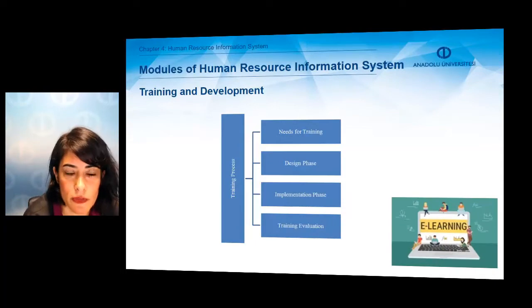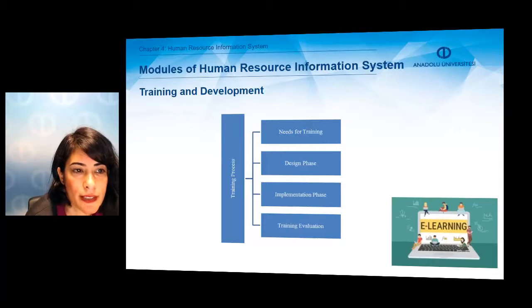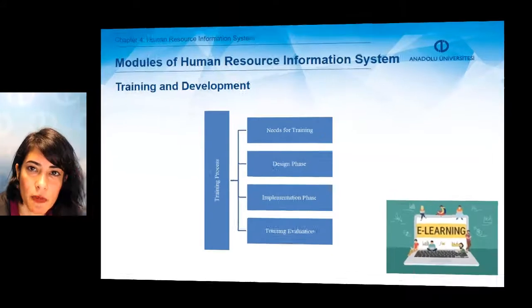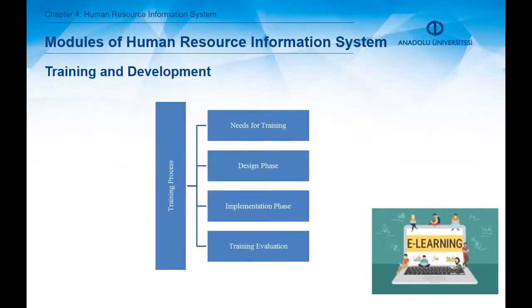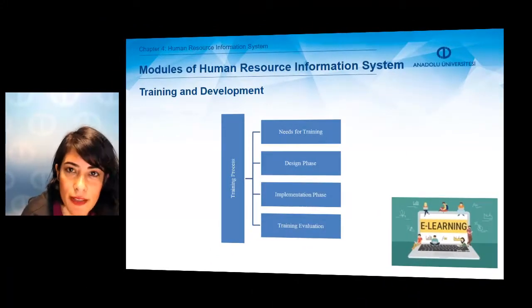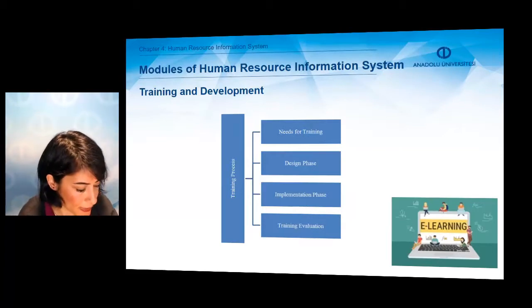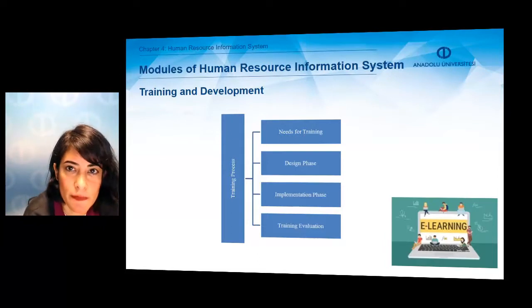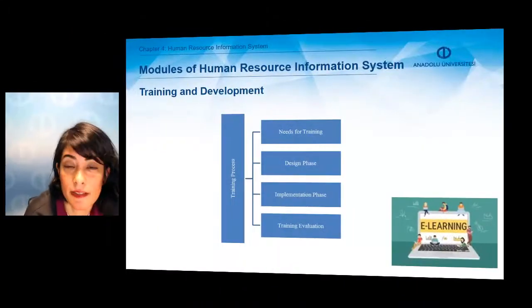Another function of Human Resource Information System is training and development, which is really essential. The first step of the training process is identifying training needs — meaning, what kind of training models do my employees need, and what kind of abilities or skills do they need to perform their jobs better? We have to analyze this. Training can use performance data produced by Human Resource Information System to more effectively design the training process.